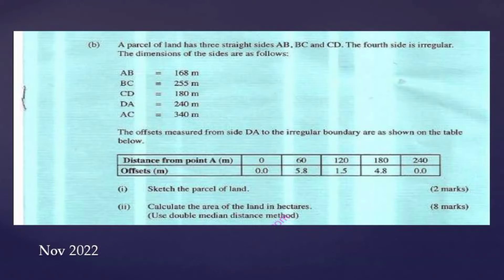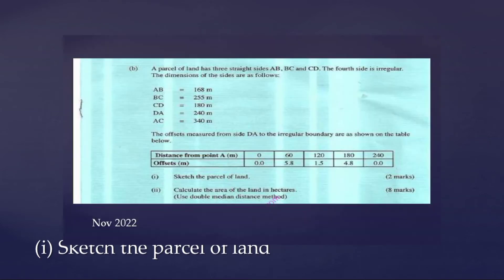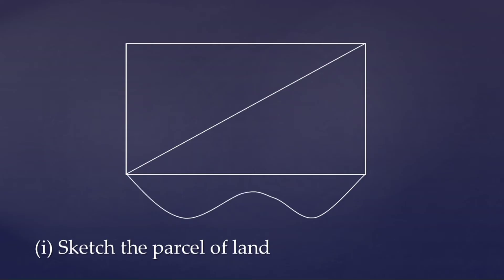Having done that, let's look at our first question which asks us to sketch the parcel of land. Going back to the data given, we have three straights and here our fourth side we have been told it's an irregular shape. Starting from point A, we draw the lines AB, BC, CD, and DA as irregular as possible.